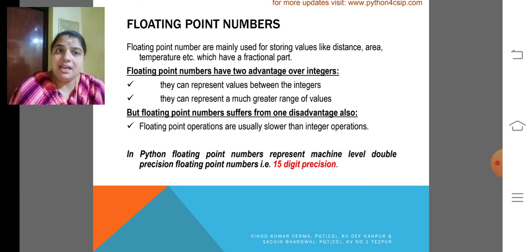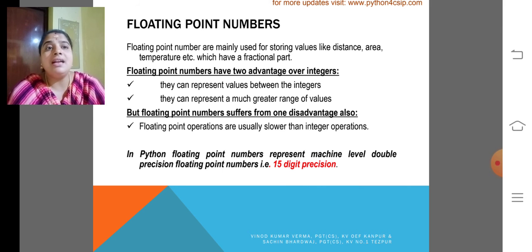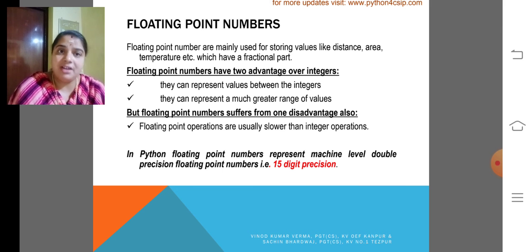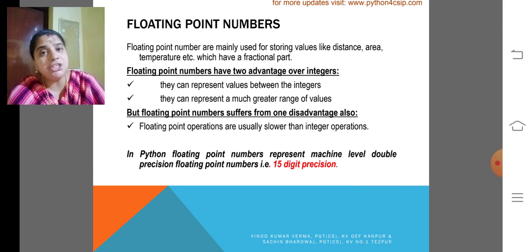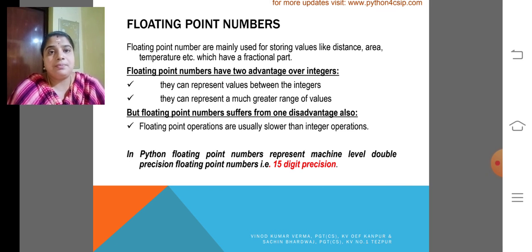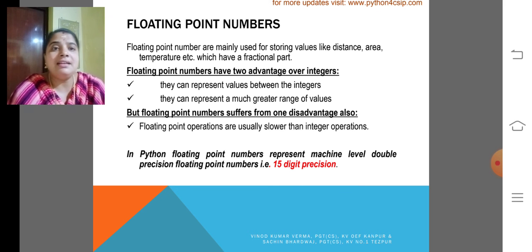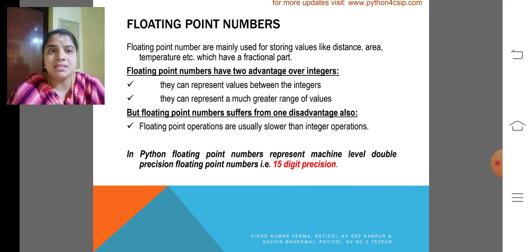But floating point numbers suffer from one disadvantage also. Floating point operations are usually slower than integer operations. Why? Because it is having a fractional part.